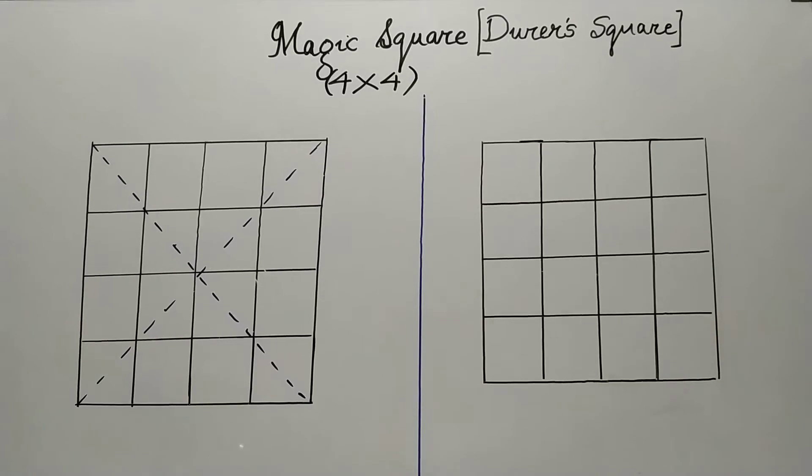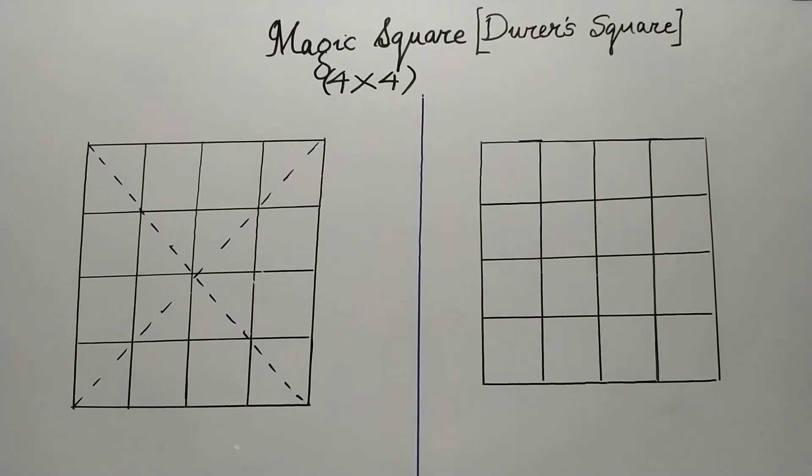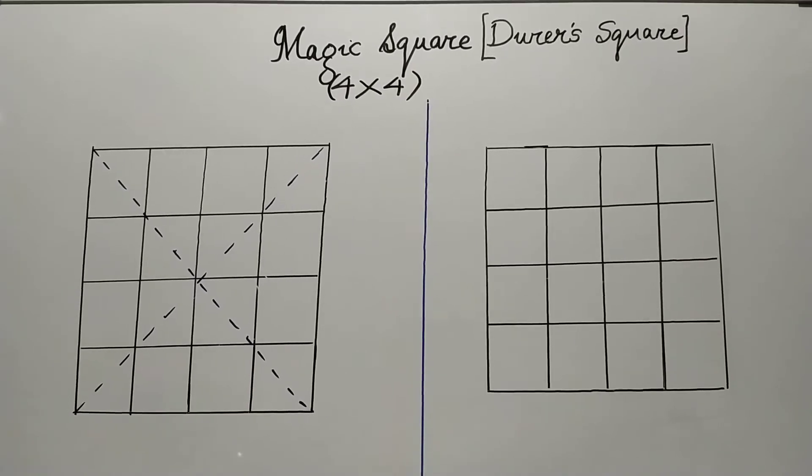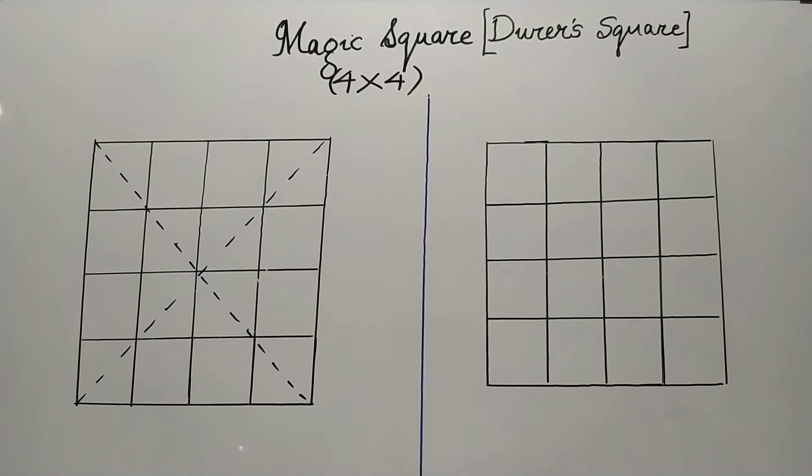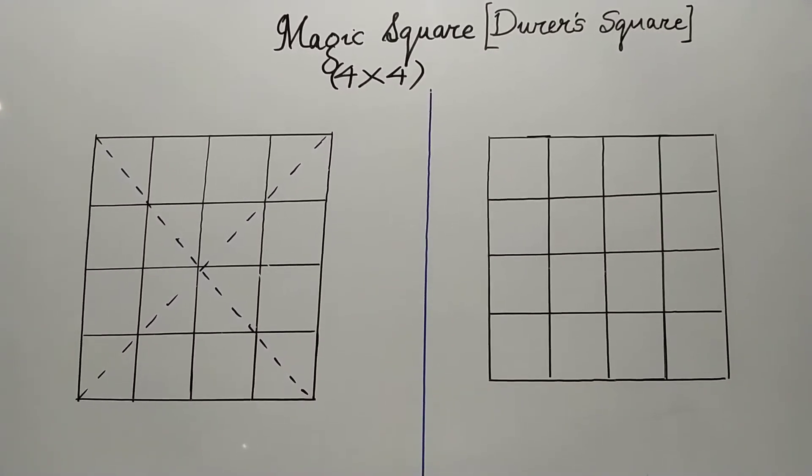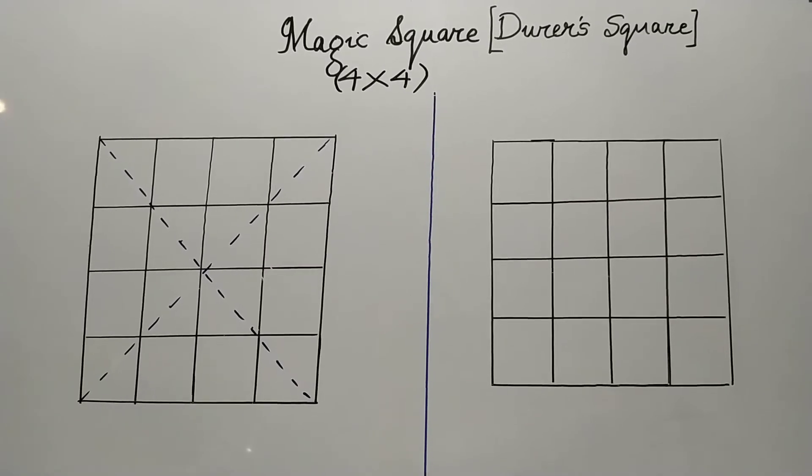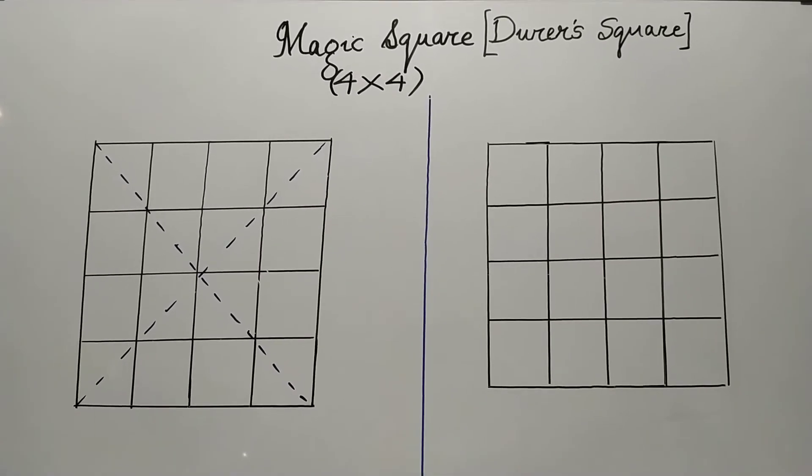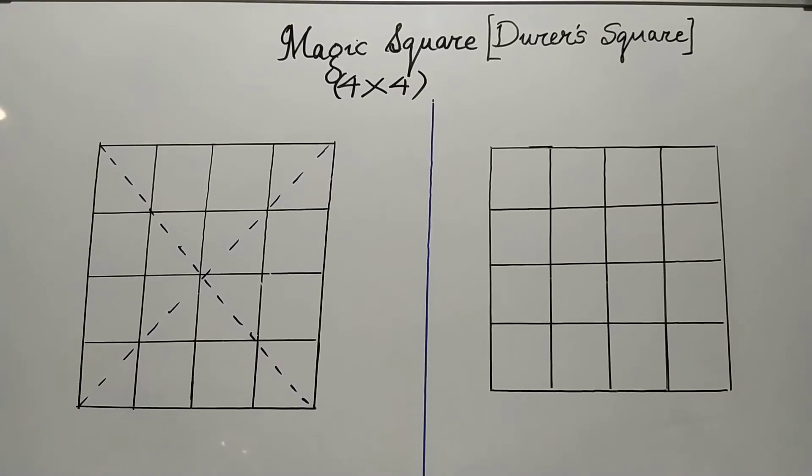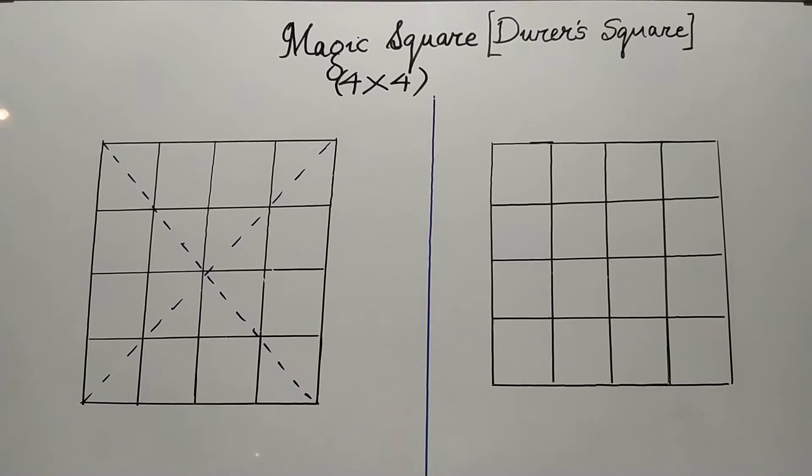Dürer was a German national. He was a painter, printmaker, and a theorist of the German Renaissance. This particular square was found on one of his paintings in a church. And at a corner in a prominent painting, this magic square was engraved.